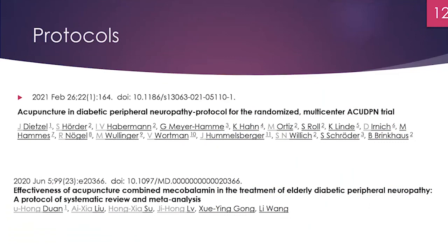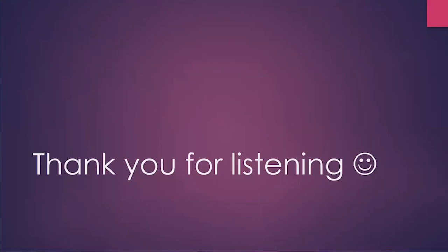I also decided to look for newer studies on diabetic neuropathy and found two protocols. I found one from last year — it is also a systematic review, and when it will be completed I don't know, but if you're interested you can keep an eye out for it. There is also a protocol published this year for a randomized trial where they are actually going to treat people with acupuncture — also an interesting study to read once results are published, though it will probably take some time. Thank you very much for taking your time to listen to this.